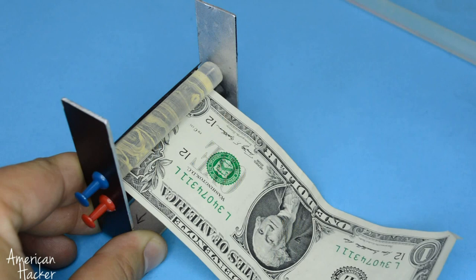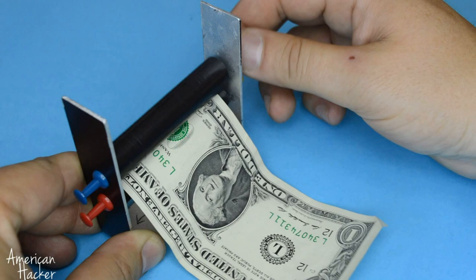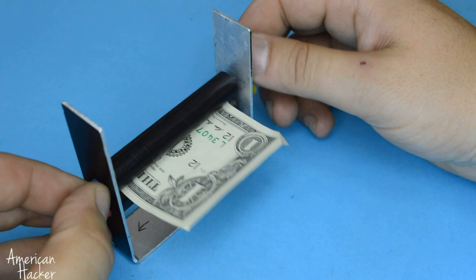One of the rollers will take the blank paper, and the other will give the printed money. Super simple money magic printer that you can build with stuff that you have at home.